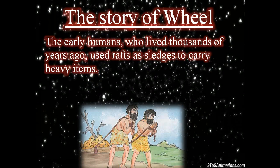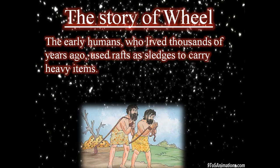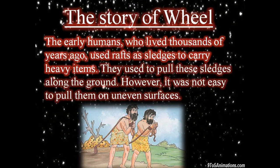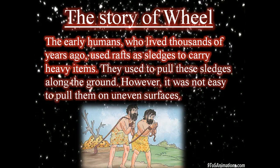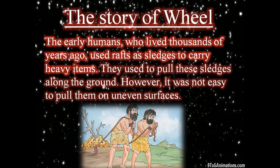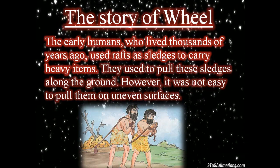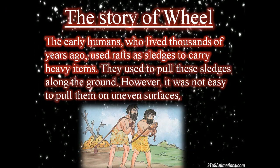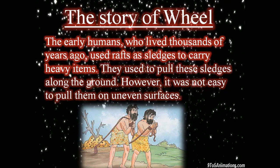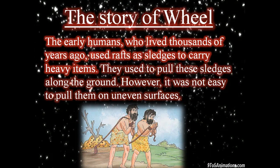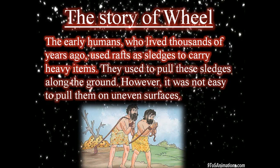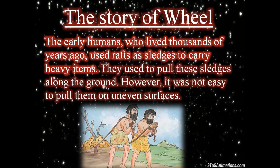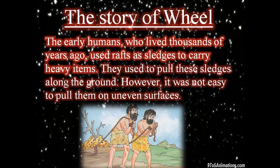The Story of the Wheel: The early humans who lived thousands of years ago used rafts as sledges to carry heavy items. They used to pull these sledges along the ground. A raft is a flat structure made of pieces of wood tied together. Early humans took pieces of wood, tied them together, and used it as a boat. Sledges are vehicles without wheels used for traveling on snow. They used these rafts and sledges to carry heavy items.